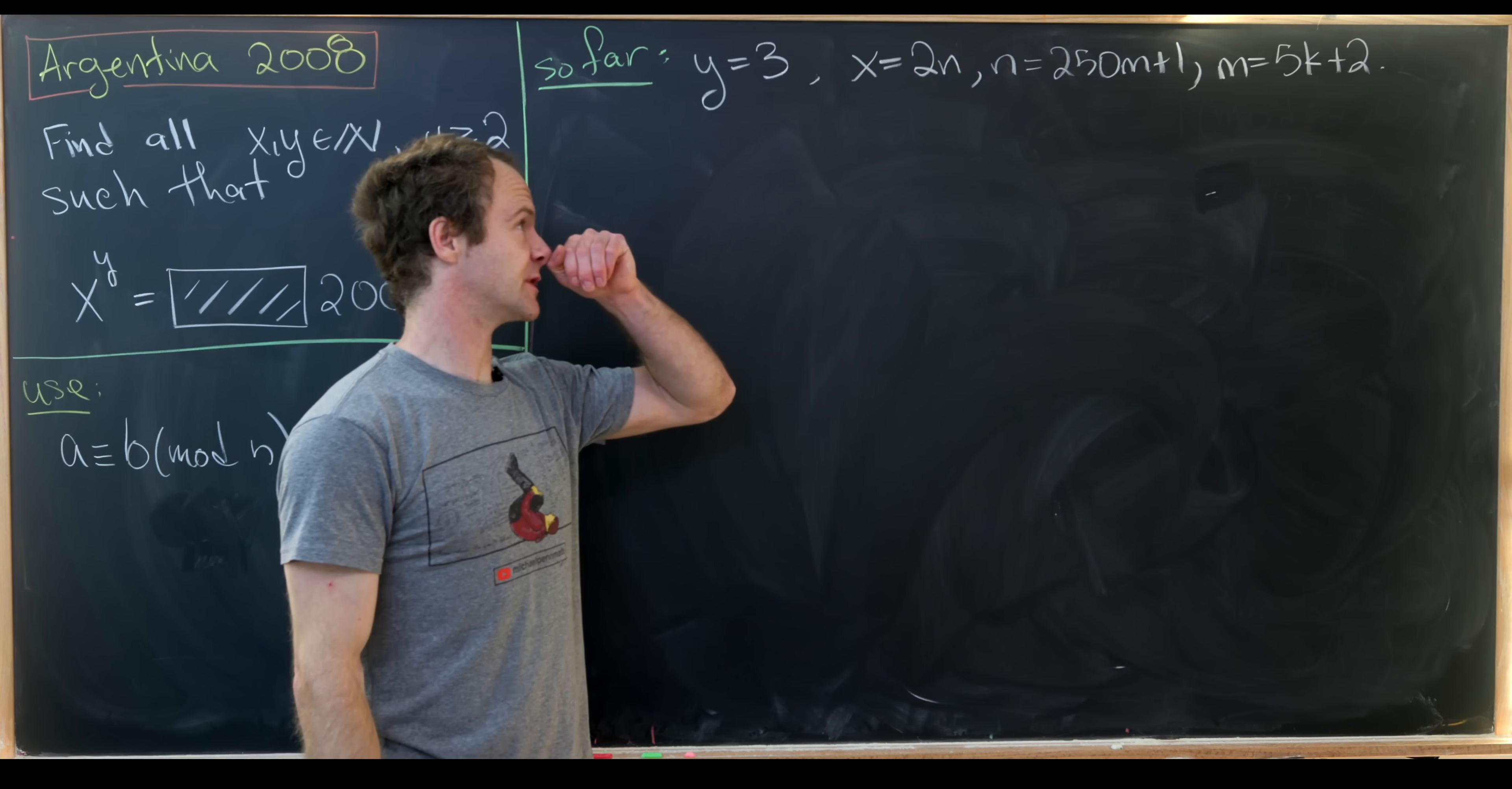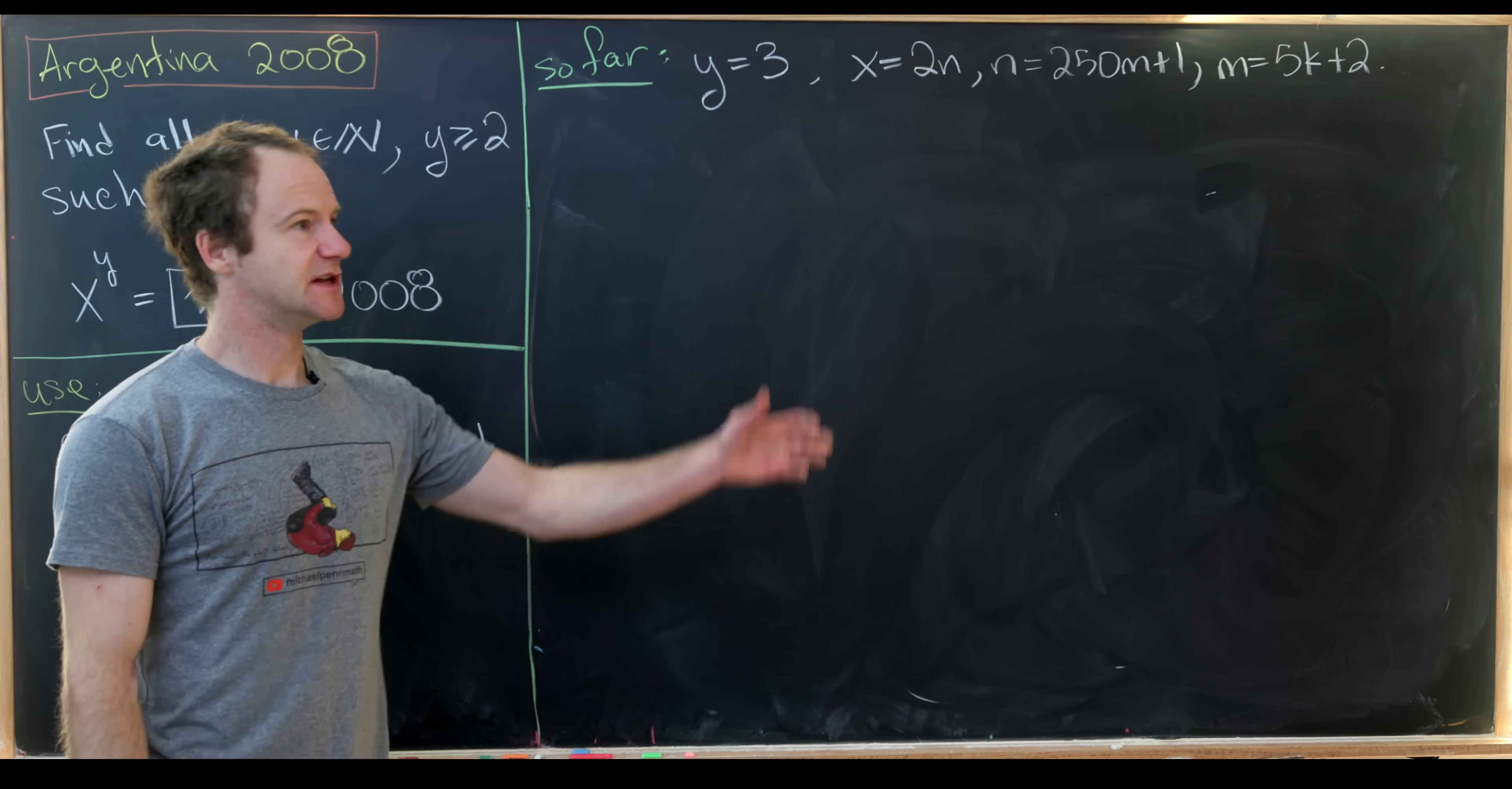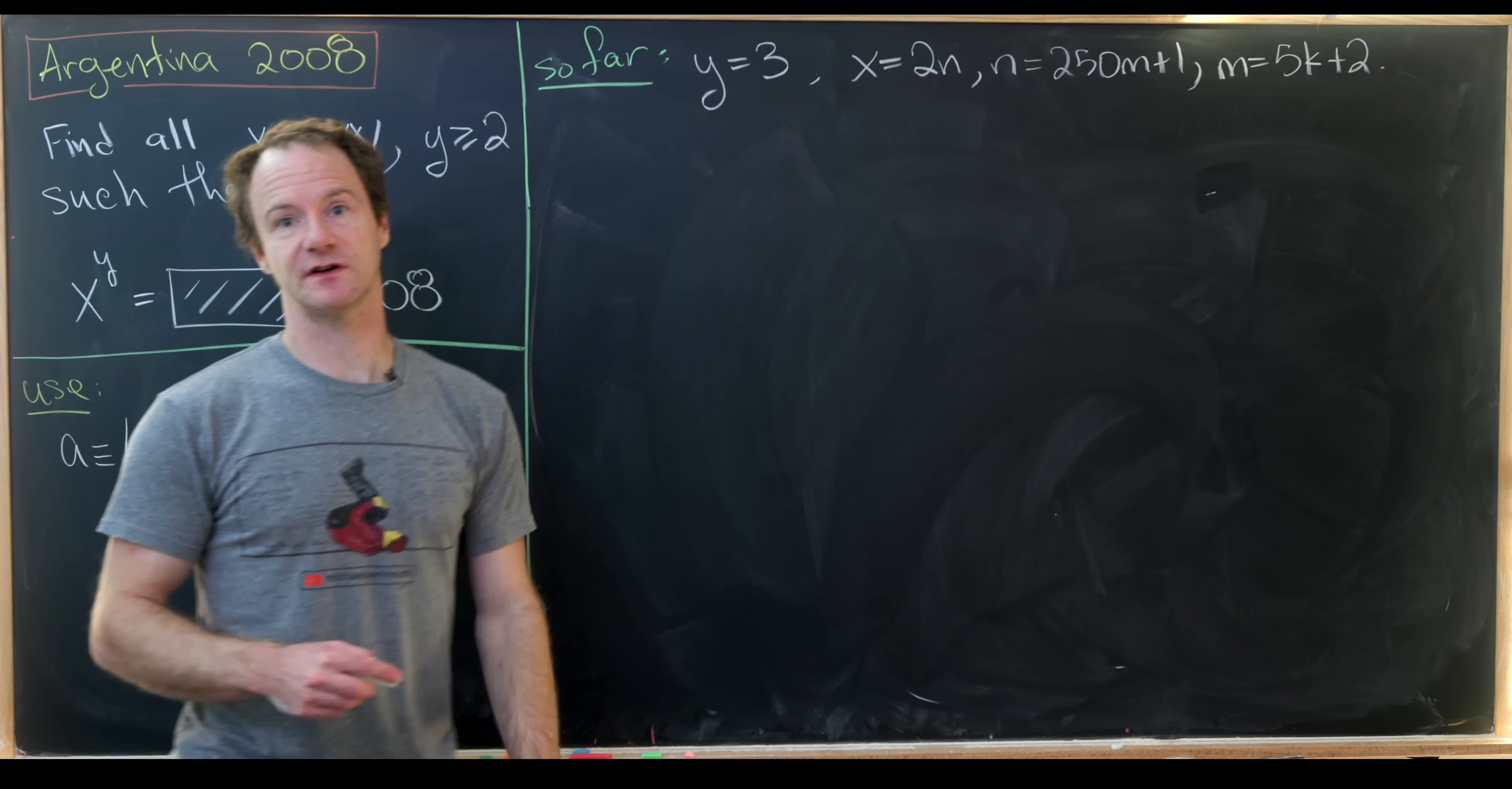We determined that y was equal to 3. Then we have x is equal to 2n, n is 250m plus 1, and m is 5k plus 2. Now we just have to do a bunch of composition of those variables back together to get a final formula for x.